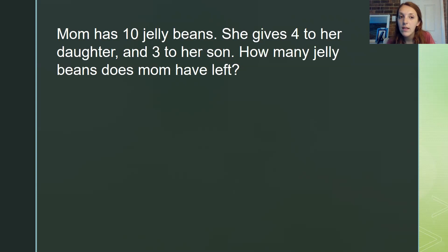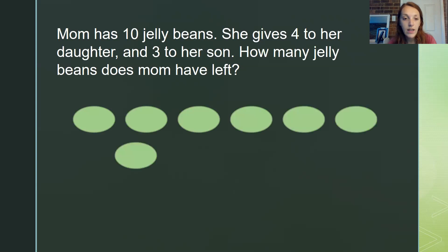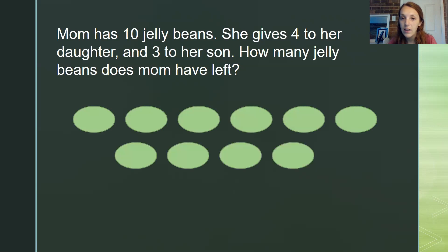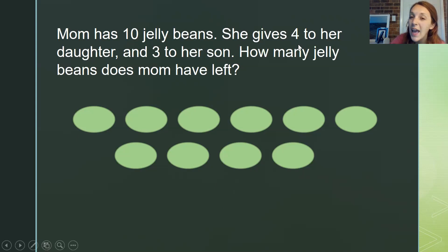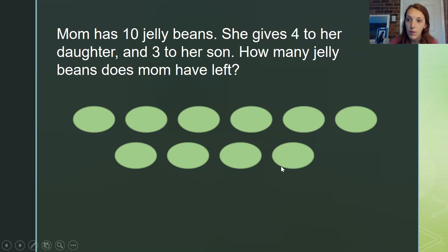Let's draw a picture of it. Mom has ten jelly beans, so let me draw ten: one, two, three, four, five, six, seven, eight, nine, ten. This is all of the jelly beans mom had — she only had ten. She gave four to her daughter. I'm going to take them away because they're not with mom anymore. She gave them away and her daughter has them now. So let me take away the four she gave to her daughter.